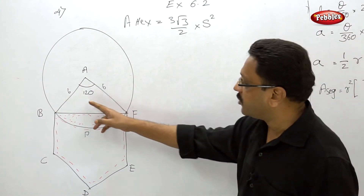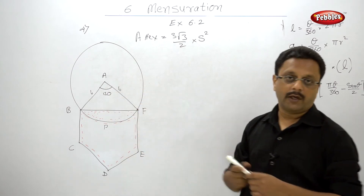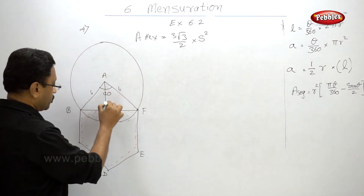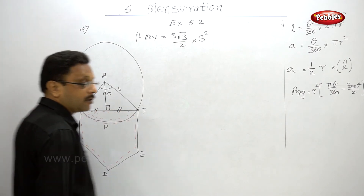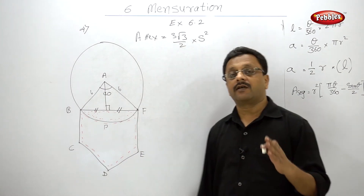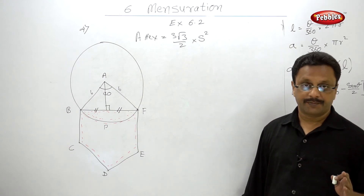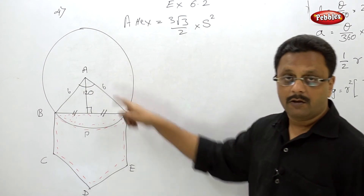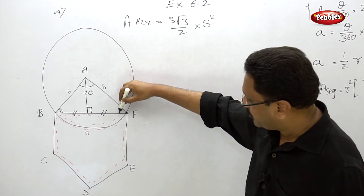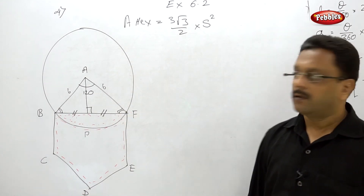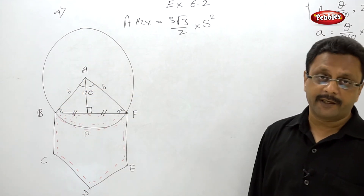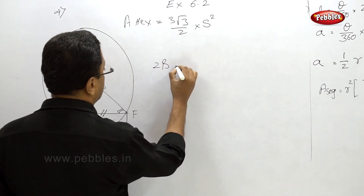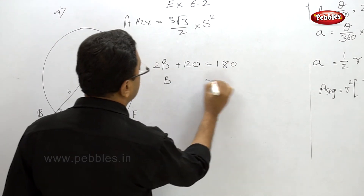Let us first find the area of the triangle. Area = (1/2) × base × height, but we don't know the base or height directly. So draw a perpendicular from A on the chord. A perpendicular from the center of a circle on the chord bisects the chord. In the larger triangle, it is an isosceles triangle — the two equal sides are the radii, so opposite angles are also equal. The sum of angles is 180 degrees; since the apex angle is 120, we get 2b + 120 = 180, so b = 30 degrees.